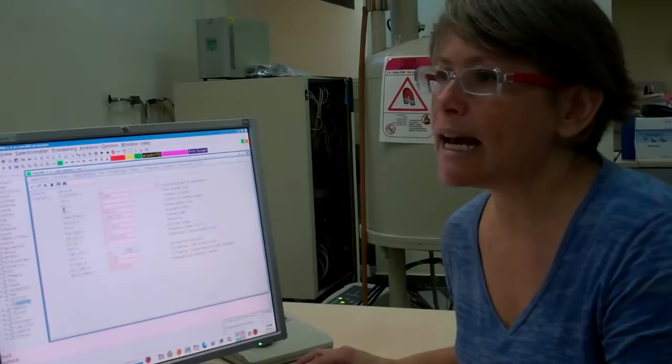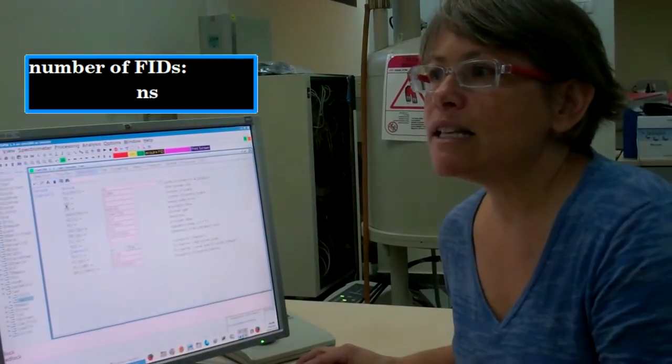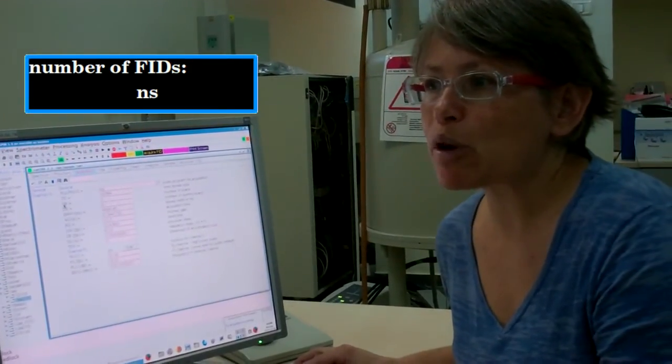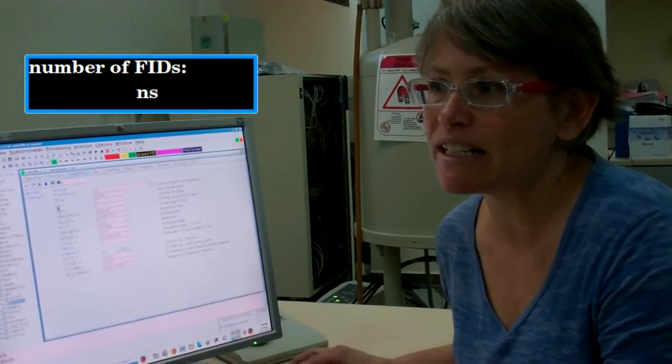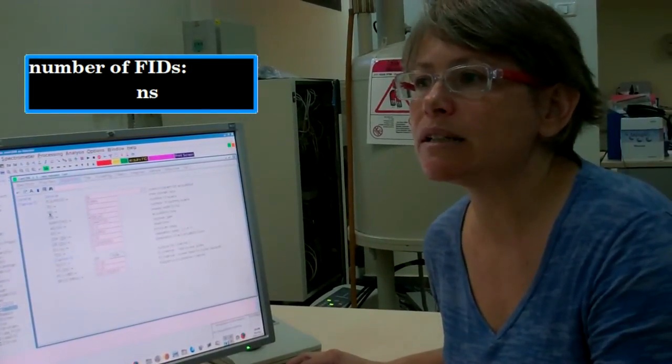The next parameter is NS. This determines how many times the Pulse Acquire experiment will loop, or in other words, how many FIDs will be signal averaged to increase the signal-to-noise ratio.